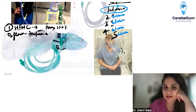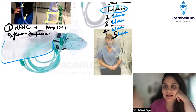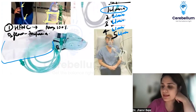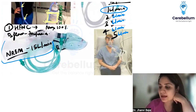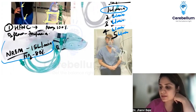The mask with a bag attached to it that can store oxygen is called the non-rebreathing mask. We give oxygen through it at 15 liters per minute, and the maximum FiO2 that we can give is 80%. This is also a previous year question, so please remember it.